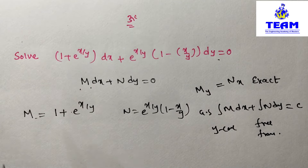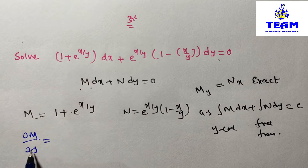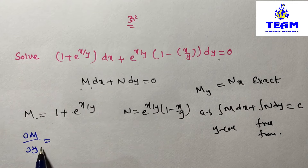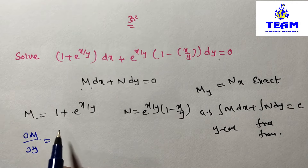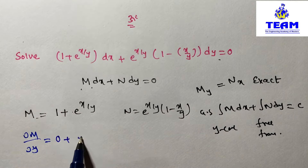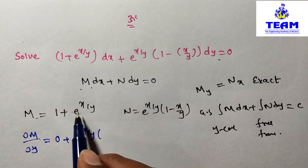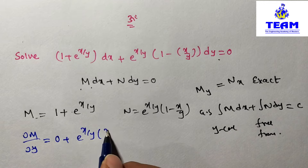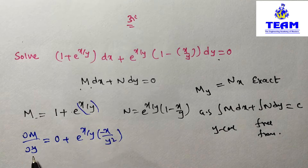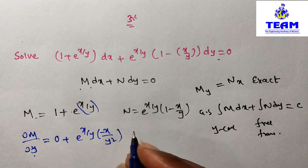We find ∂M/∂y by differentiating M partially with respect to y, treating all other variables as constant. The first term (1) has no y, so its derivative is 0. For e^(x/y), the derivative is e^(x/y) times the derivative of the bracket with respect to y. Since x is constant and y is in the denominator, the derivative of x/y is -x/y². So ∂M/∂y = -x/y² · e^(x/y).